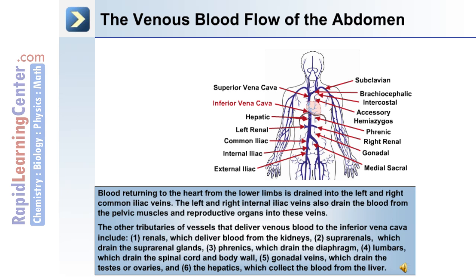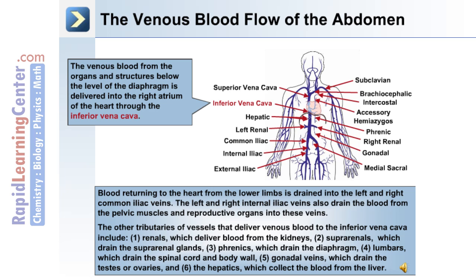Blood returning to the heart from the lower limbs is drained into the left and right common iliac veins. The left and right internal iliac veins also drain blood from the pelvic muscles and reproductive organs. Other tributaries that deliver venous blood to the inferior vena cava include: the renals, which deliver blood from the kidneys; the suprarenals, which drain the suprarenal glands; the phrenics, which drain the diaphragm; the lumbars, which drain the spinal cord and body wall; the gonadal veins, which drain the testes or ovaries; and the hepatics, which collect blood from the liver.